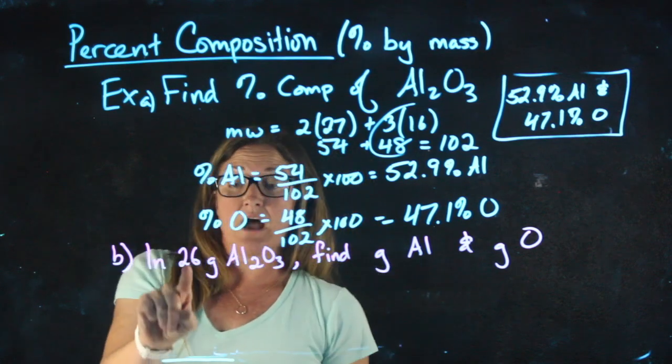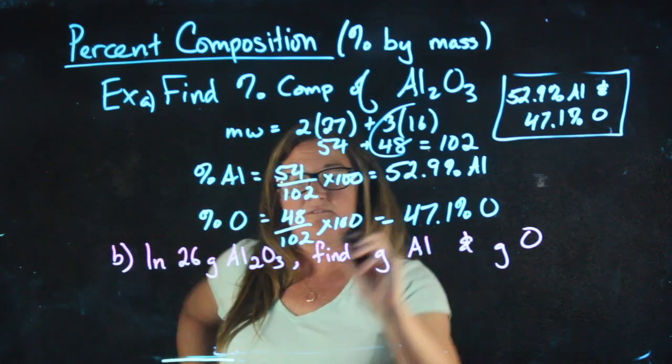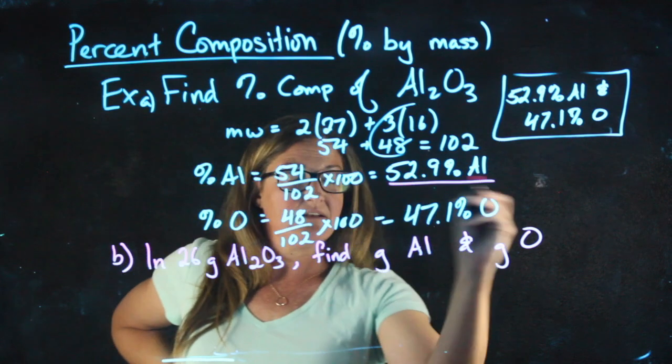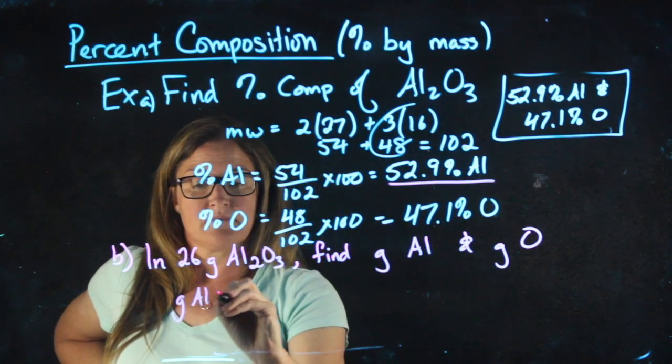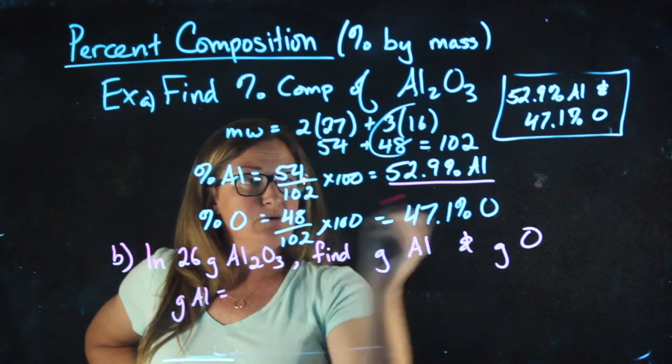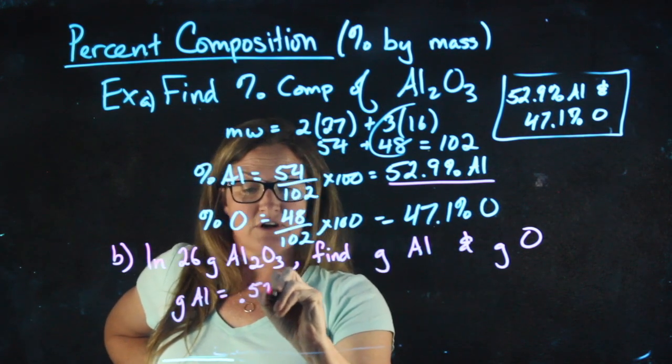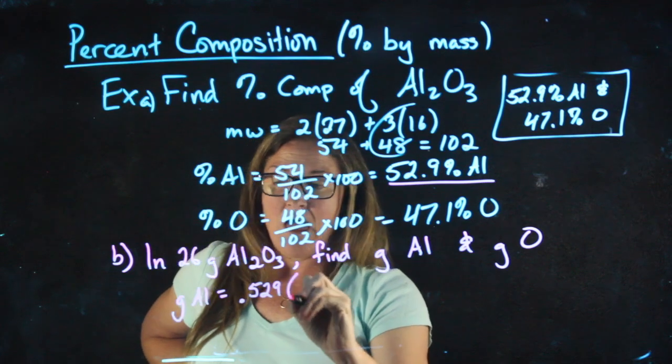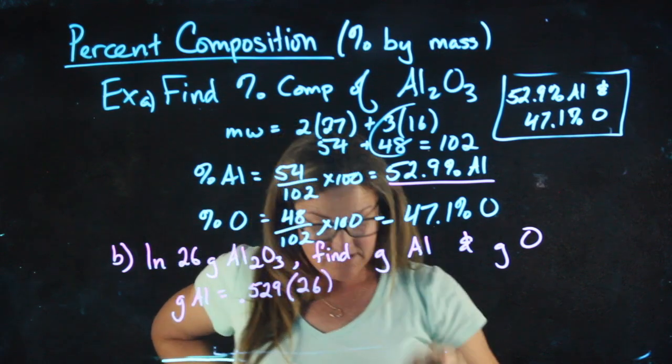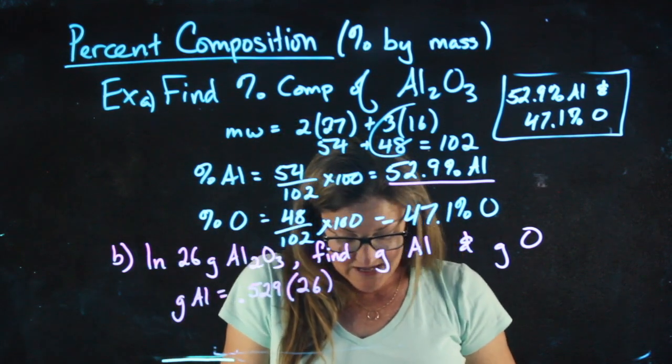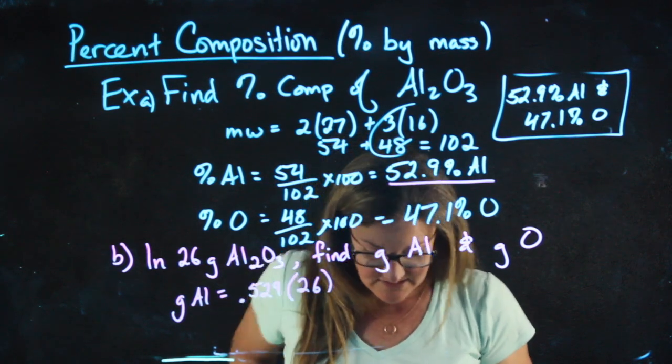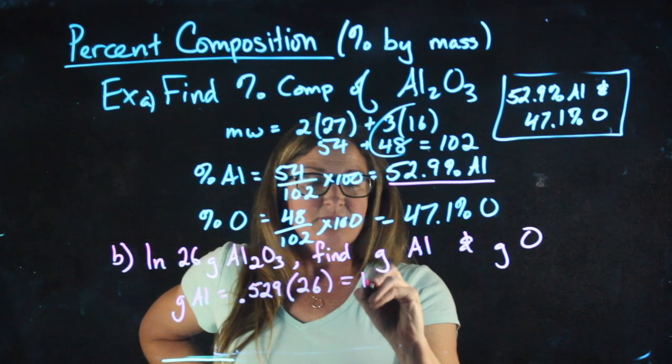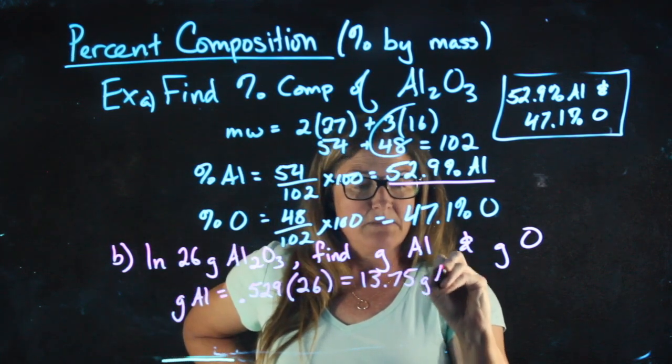I know that of this 26 grams, 52.9 percent of it is aluminum. So to get the grams of aluminum, I will take 52.9 percent, turn it into a decimal, and multiply by the total grams. 0.529 times the total grams of 26 gives me 13.75 grams of aluminum.